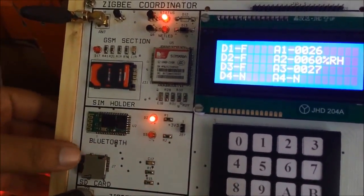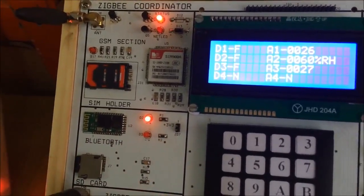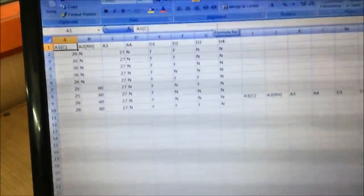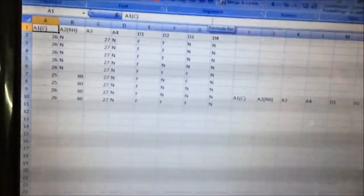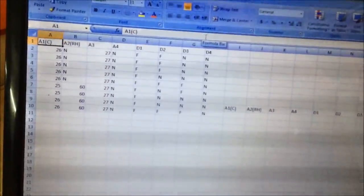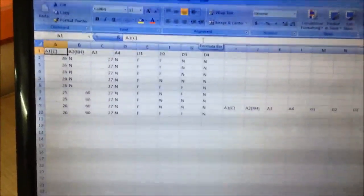And after storing these values in SD card, I can view it on my laptop. And in SD card format, you guys can clearly see, it is showing the value of A1, 26 degrees Celsius, A3, A4 and all our digital sensors values in the SD card.